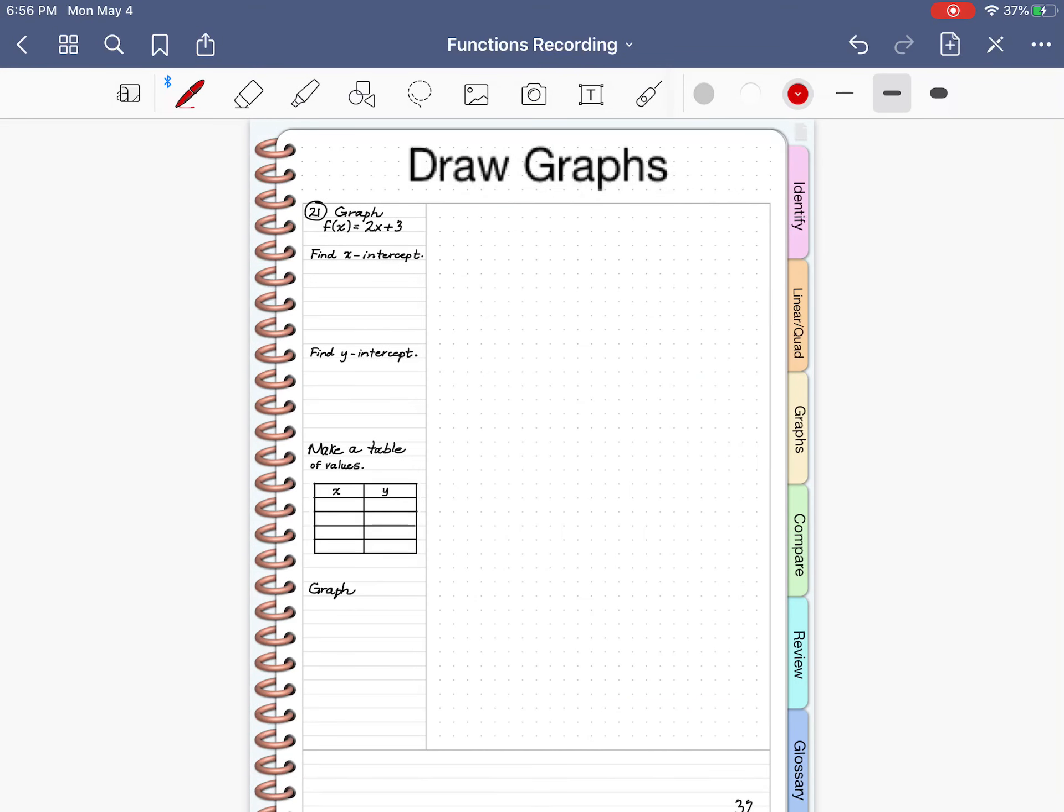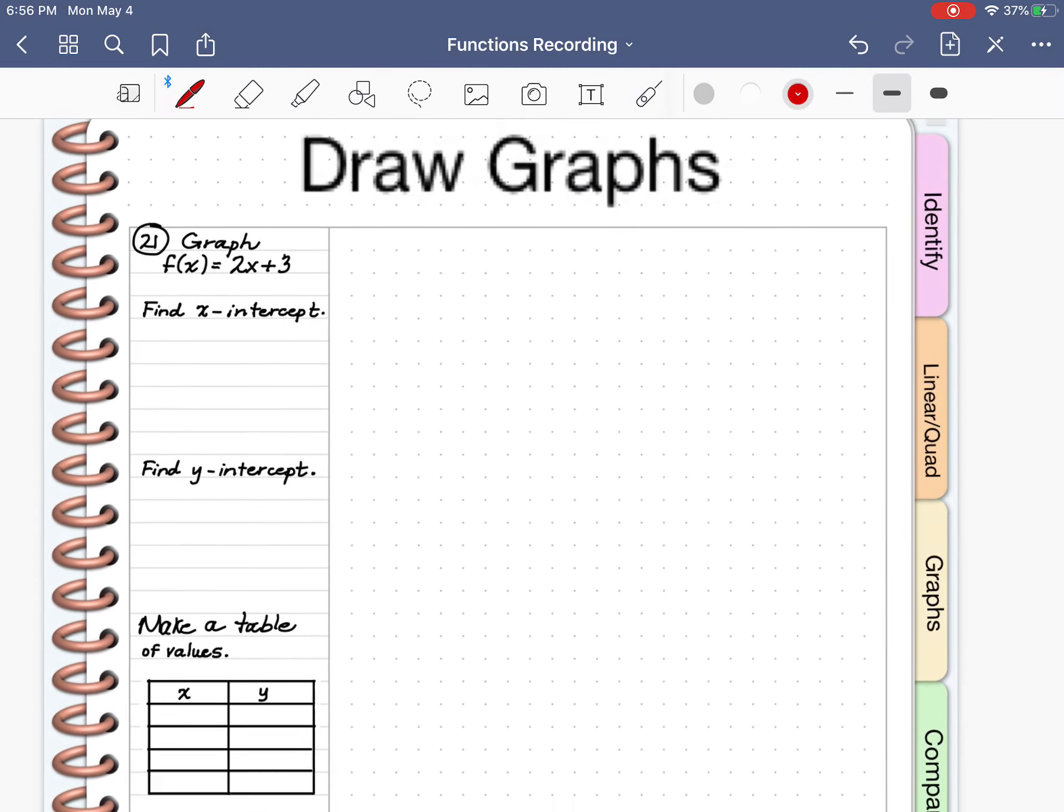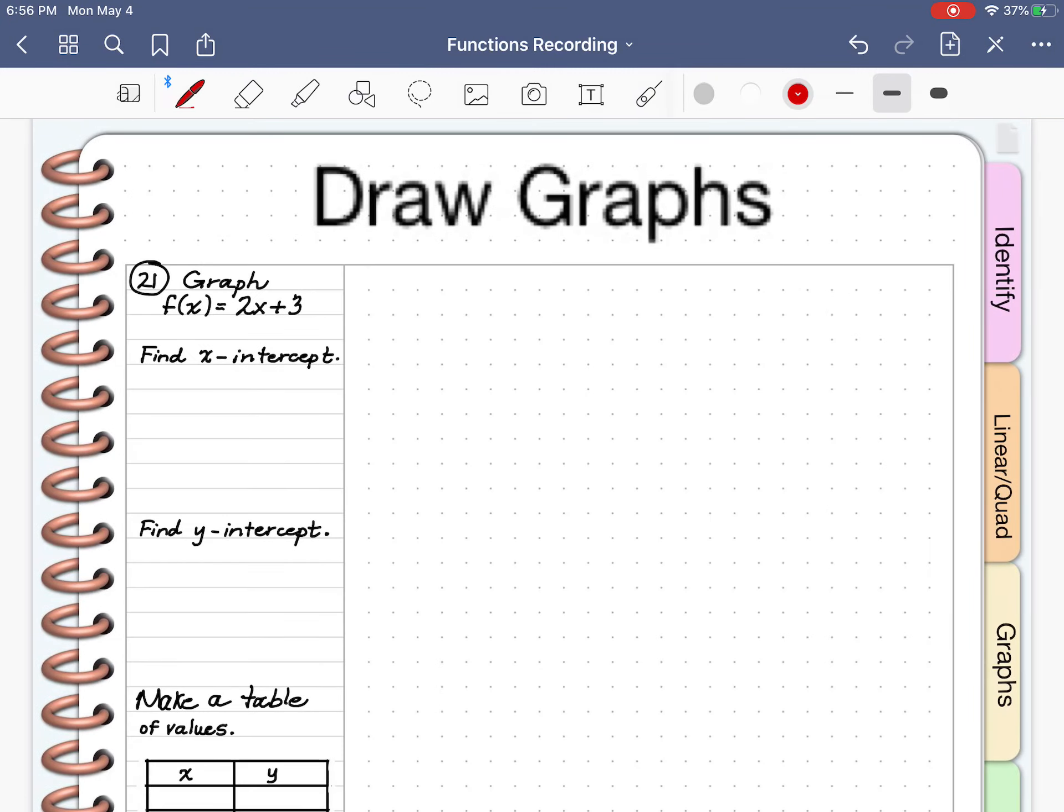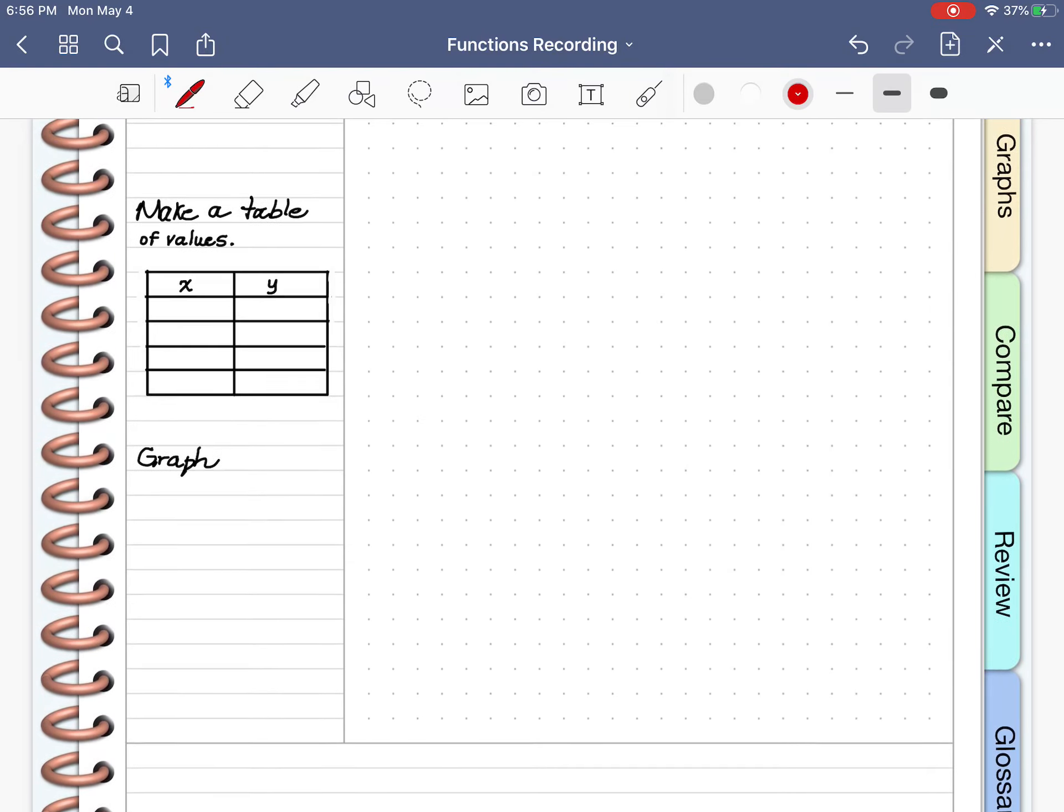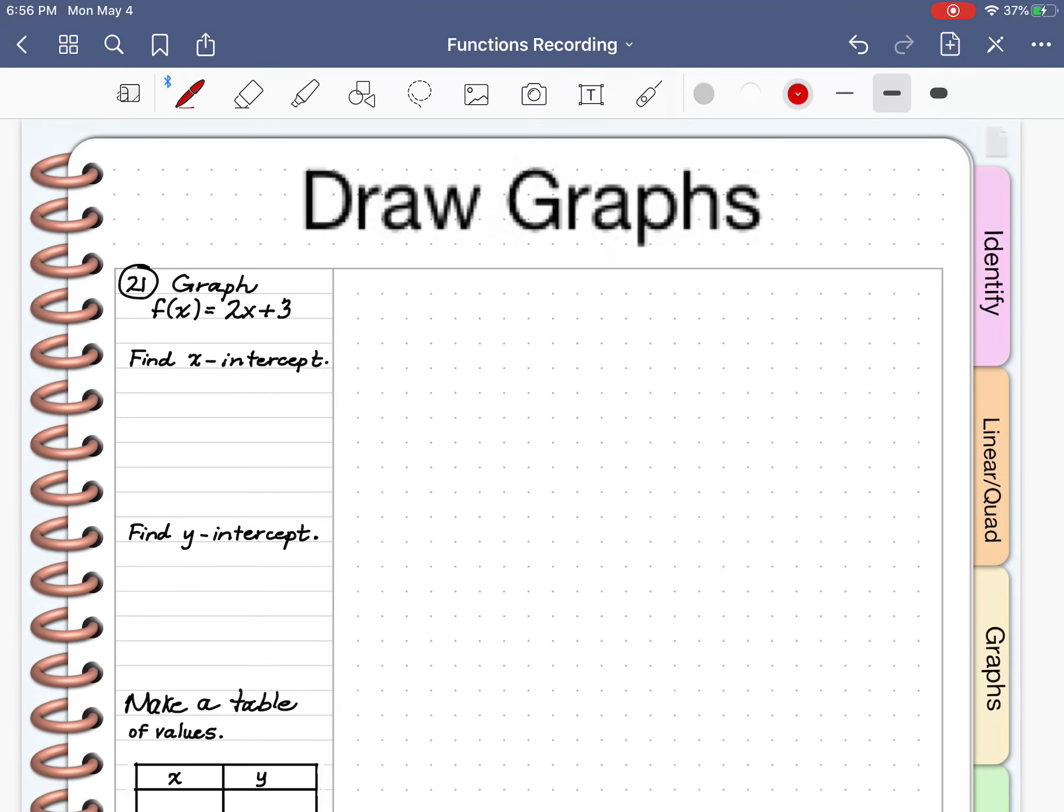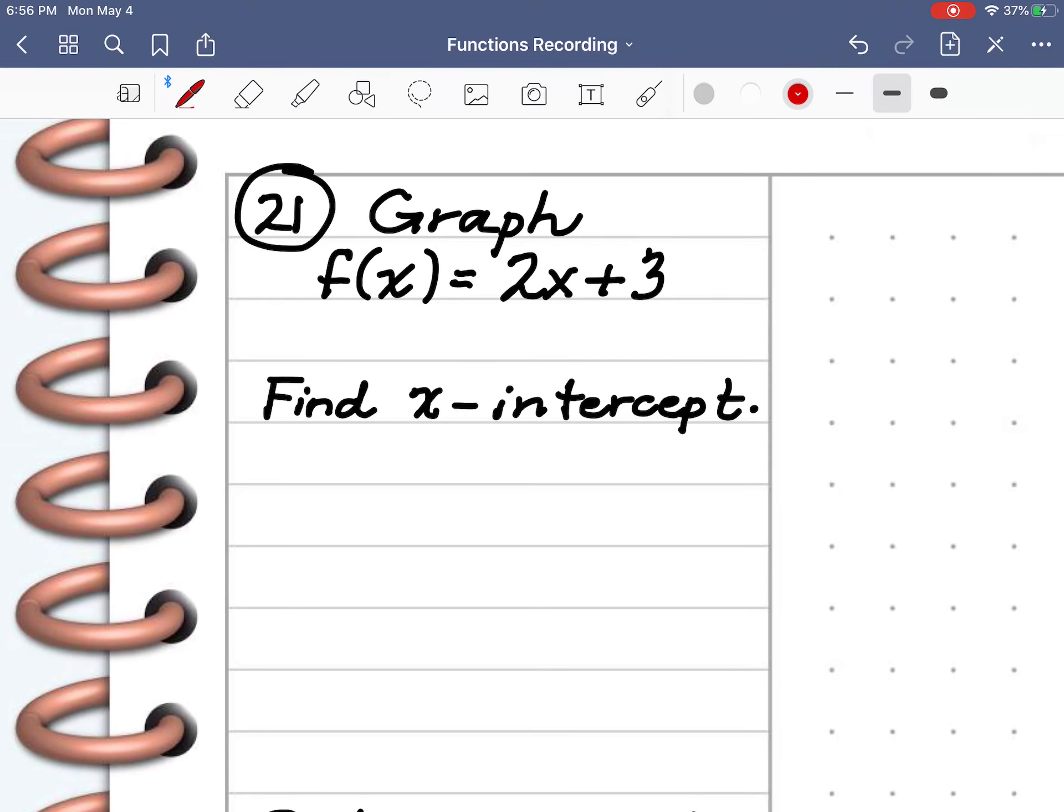Let's try this one. It says to graph the function f(x) = 2x plus 3. Find the x-intercept. Find the y-intercept. Make a table of values. And then graph. So the first thing I'm going to do is find the x-intercept. And you have to remember what that means. That means that y is nothing. Y is zero.